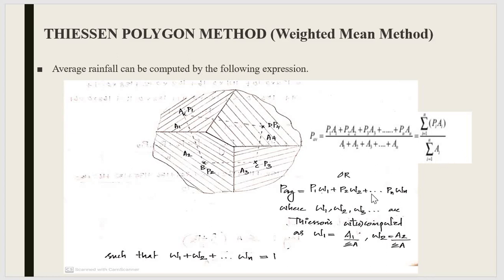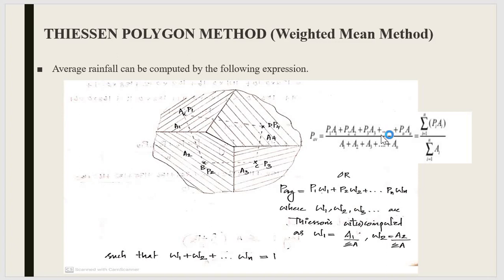The problem can also be solved using weightage factors. If weightage factors W are given, then P_avg = P1·W1 + P2·W2 + ... + Pn·Wn, where W1 = A1/ΣA, W2 = A2/ΣA, and WN = AN/ΣA. These are called the weightage factors, and if you add all of them together, their sum equals 1. If weightage factors are directly provided, substitute them into the formula. If only the area of each polygon is given, use the ΣPiAi/ΣAi formula to find the average precipitation.